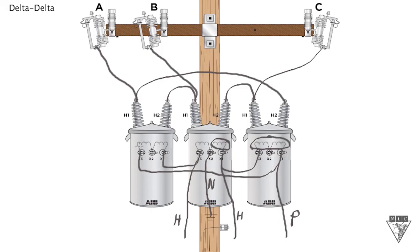With a delta-delta, one of the advantages on the primary side is you can use it on a three-wire system like a delta or an ungrounded Y system, or on a four-wire system like a grounded Y system.